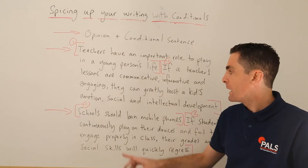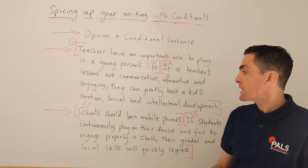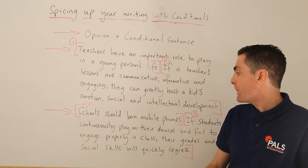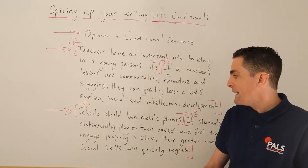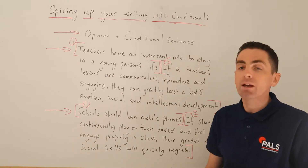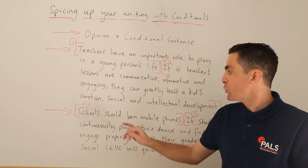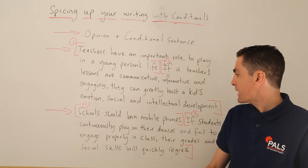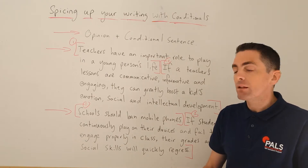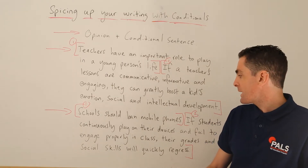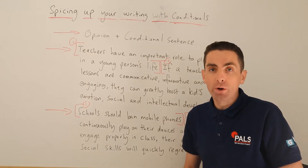Example two. Schools should ban mobile phones. If students continuously play on their devices and fail to engage properly in class, their grades and social skills will quickly regress. Schools should ban mobile phones. If students continuously play on their devices and fail to engage properly in class, their grades and social skills will quickly regress.